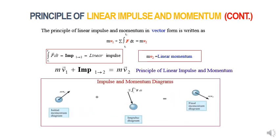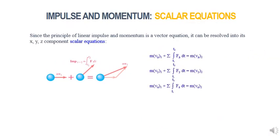The two momentum diagrams indicate the direction and magnitude of the particle's initial and final momentum, mv1 and mv2. The impulse diagram is similar to a free body diagram but includes the time duration of the forces acting on the particle. This diagram should be included in your problem solutions. Because the equations involve vector quantities, to obtain an analytical solution it is necessary to consider the x, y, and z components separately.